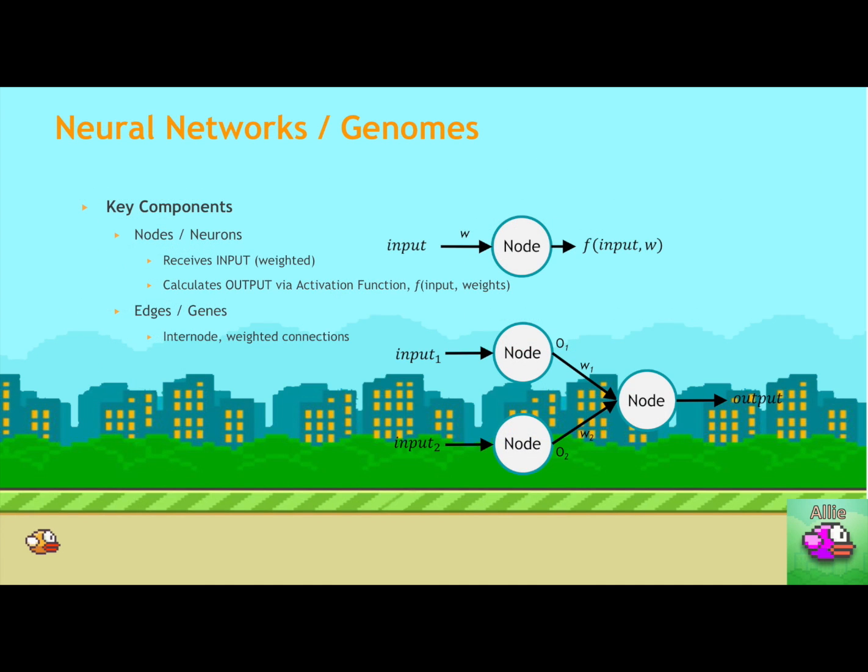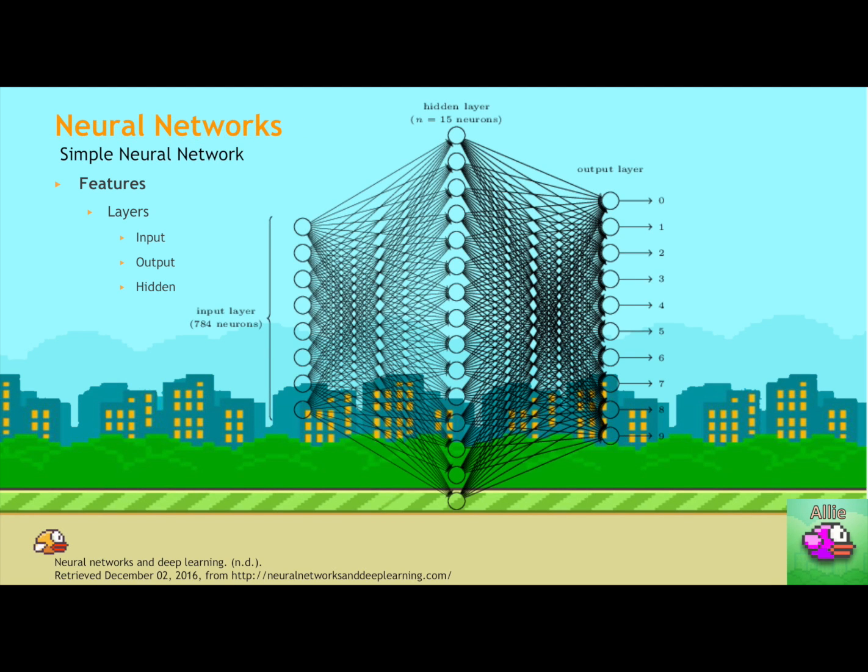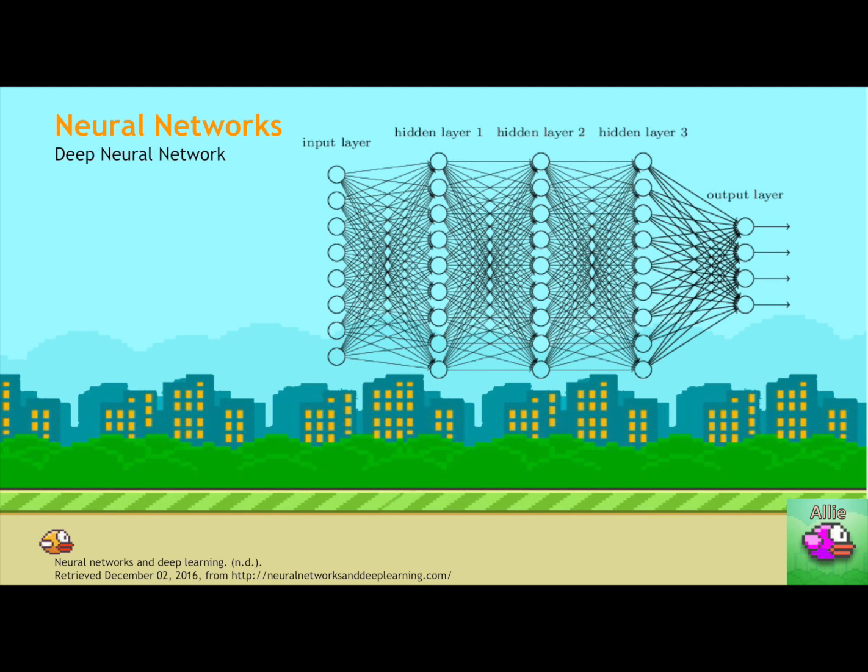So a quick recap of a neural net. So in our framework, neural networks represent genomes. And the key components of a neural net are nodes and edges or neurons and genes respectively. Nodes receive inputs and then they calculate some output via an activation function. So the features of a neural network include layers. There's an input layer, an output layer, and a hidden layer for a simple neural network which looks like this. Deep neural networks have many hidden layers.